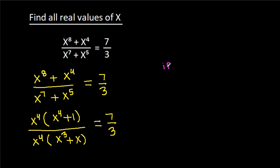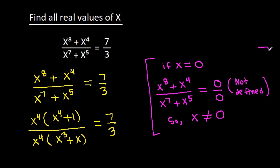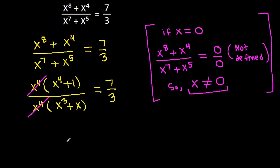Now, if x is equal to 0, then (x⁸ - x⁴)/(x⁷ - x⁵) becomes 0/0, which is not defined. So x cannot be equal to 0. Since x ≠ 0, we can cancel x⁴ from numerator and denominator, giving (x⁴ - 1)/(x³ - x) = 7/3.